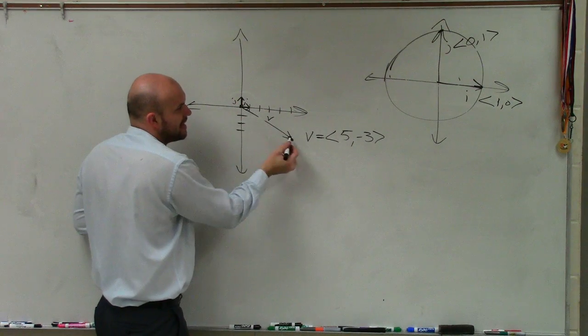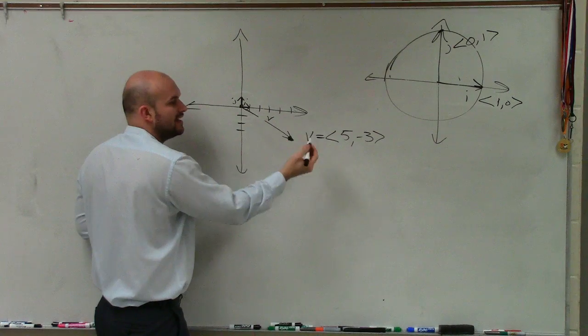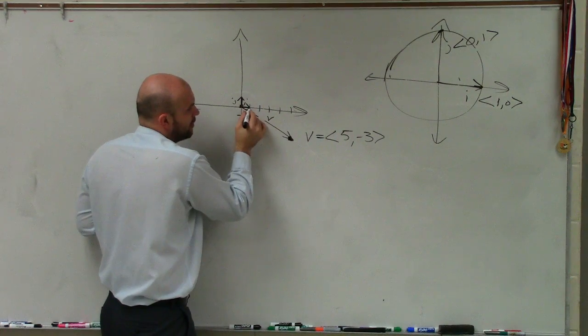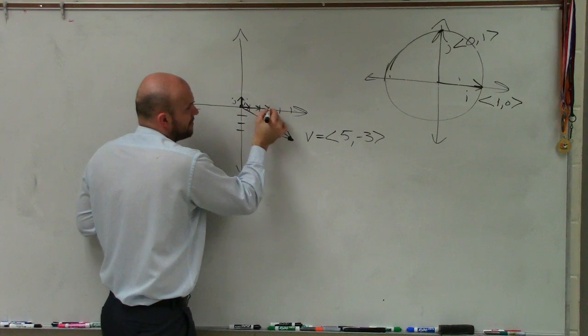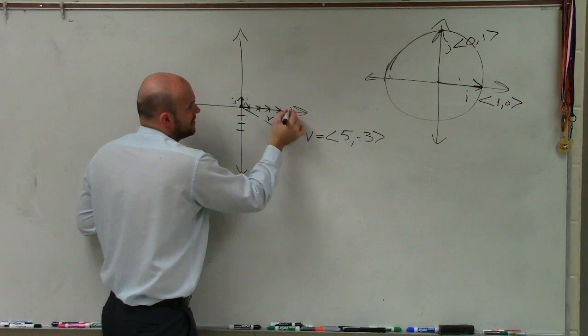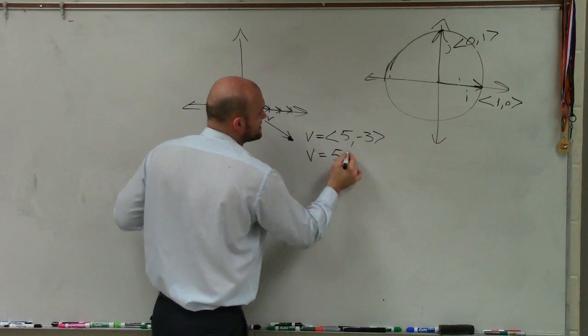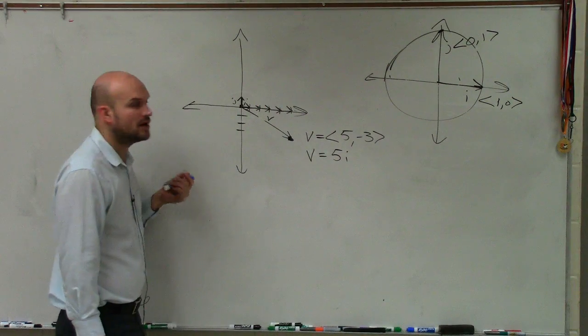So what I'm saying is, how could I write this vector v in our standard form? Well, how far over are we going for this vector? We're going 1i, 2i, 3i, 4i, 5i, right? So we can say v is the same thing as 5i's.